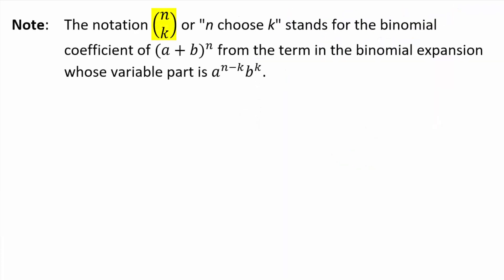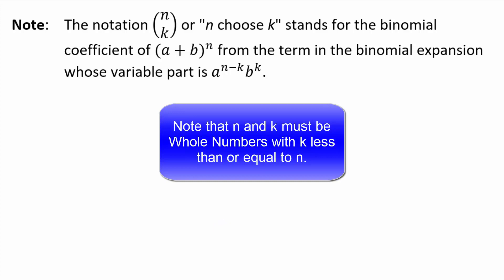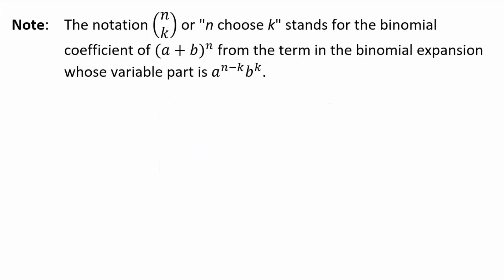So this notation, n choose k, so n on top, k below it, parentheses around it. We say n choose k when you see that. And it stands for, it's just notation, it stands for the binomial coefficient of (a+b) to the n from the term in the expansion, whose variable part is a^(n-k) times b^k. You'll see this a little better when we write out what's called the binomial theorem. But just keep that in mind for now, I'm going to come back to that, to where this comes from in a minute.